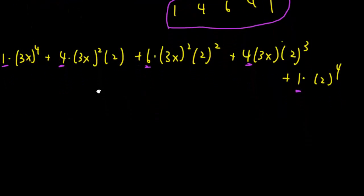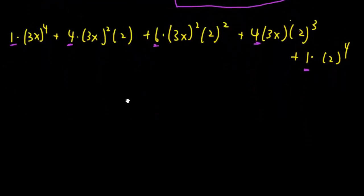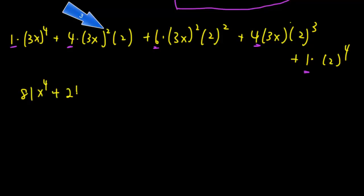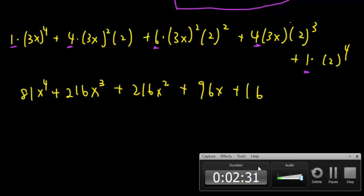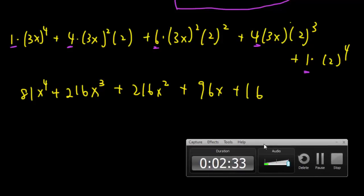Pay attention — the coefficients are 1, 4, 6, 4, 1. After writing everything down, all you have to do is simplify. The final answer is 81x⁴ + 216x³ + 216x² + 96x + 16. If you have any questions, just drop me a question on the discussion board and I'll get back to you. Hope you enjoyed the lesson and I'll see you guys in the next lecture.